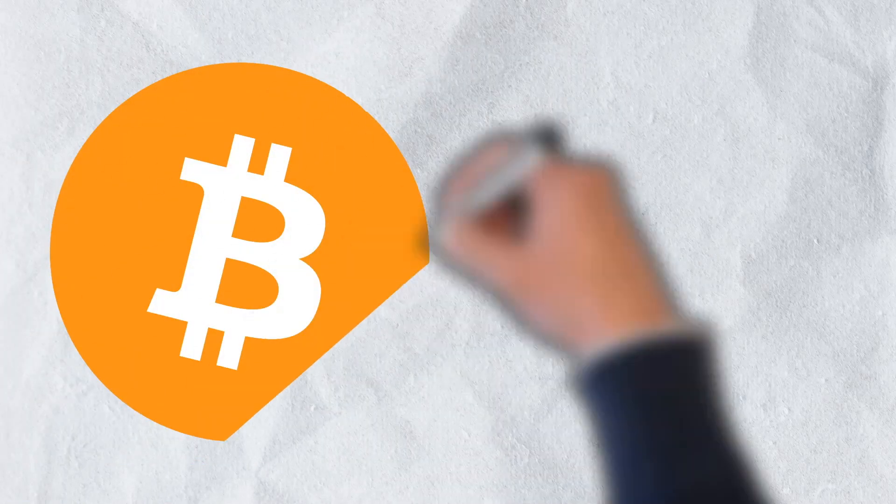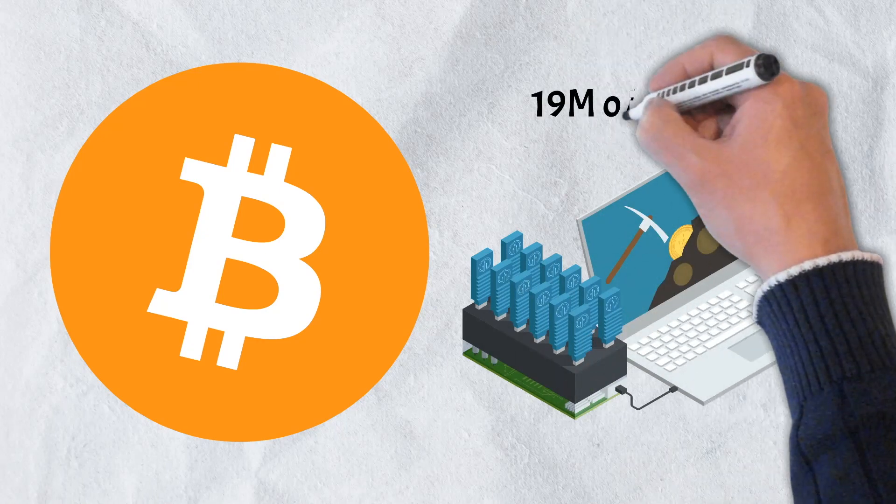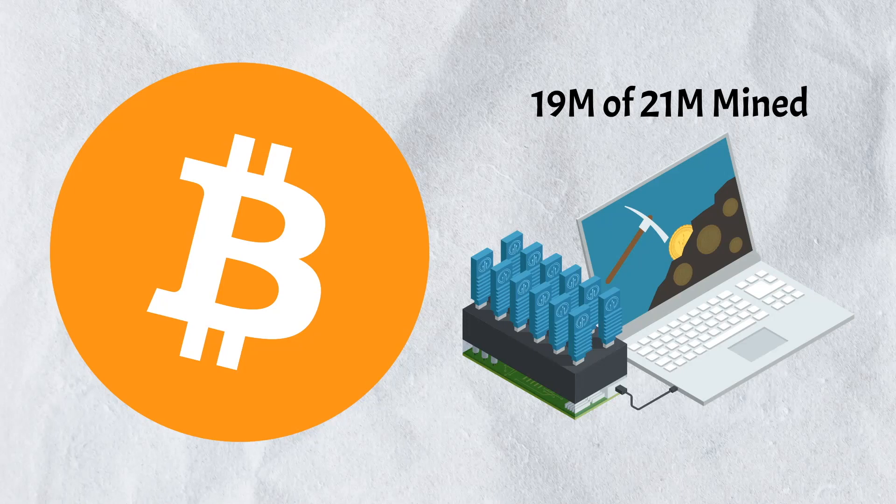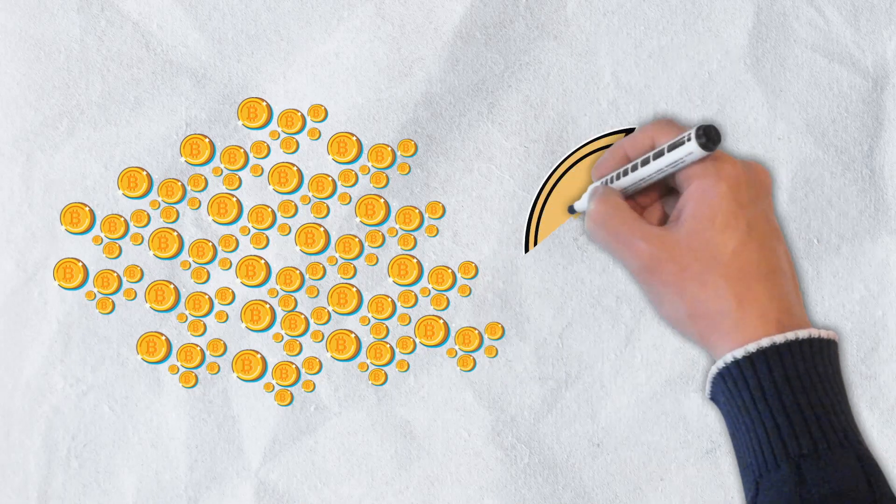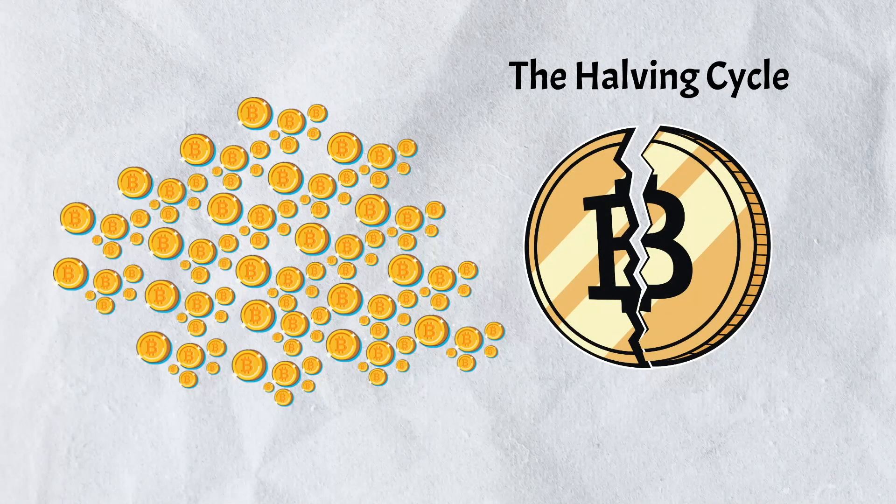In order for new Bitcoin to enter into circulation, they must be mined. Since its launch in 2009, over 19 million Bitcoins of the 21 million available have been mined. To keep too many Bitcoins from entering into circulation at one time, the founder, or founders, of Bitcoin introduced what is known as the halving cycle.